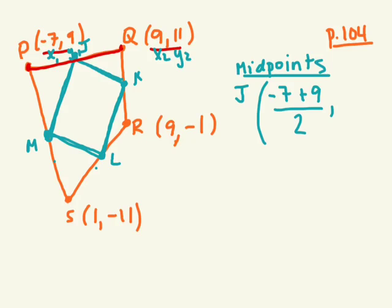Good. And then Y1, which is 9, plus Y2, which is 11. Again, divided by 2. What's negative 7 plus 9?